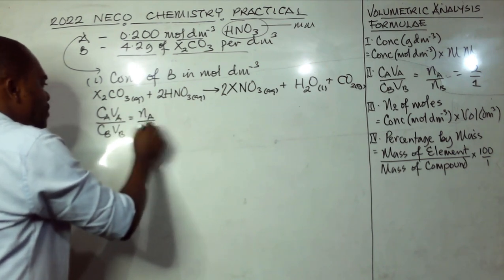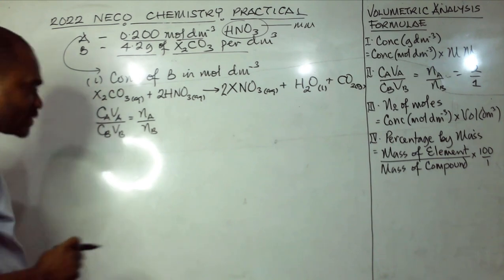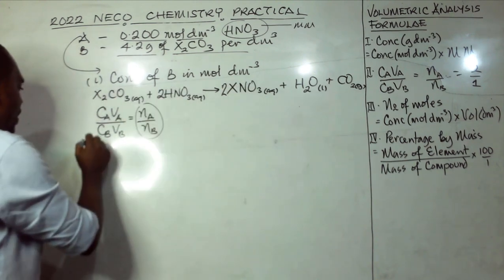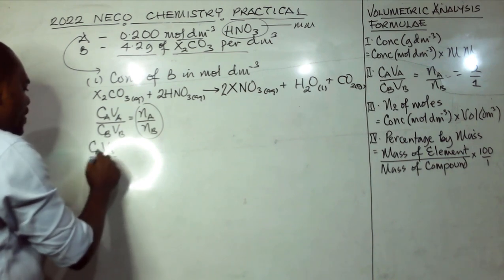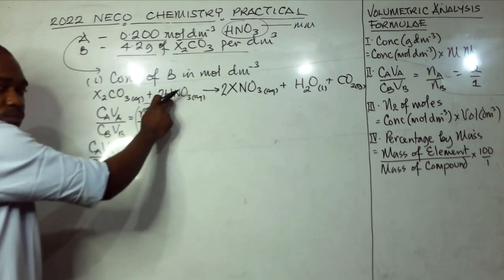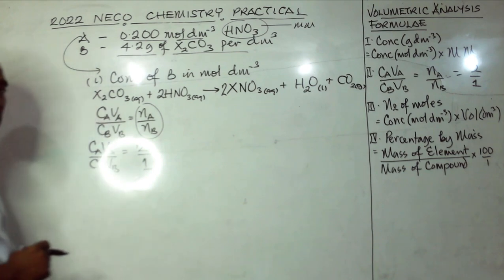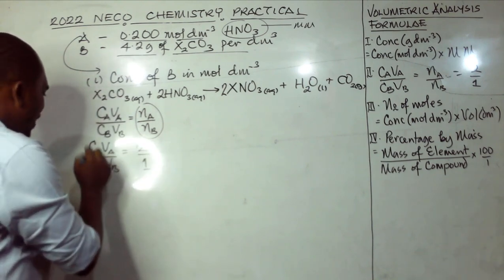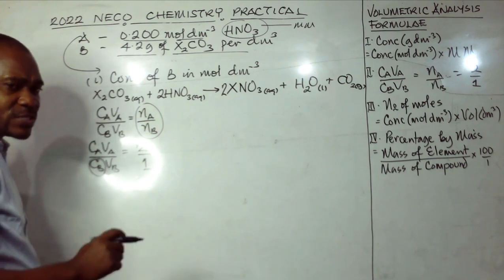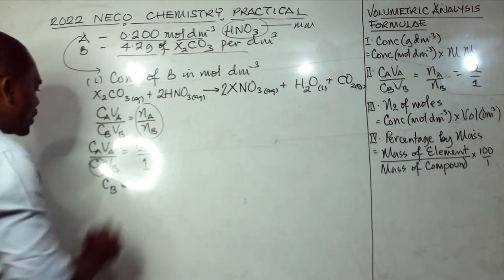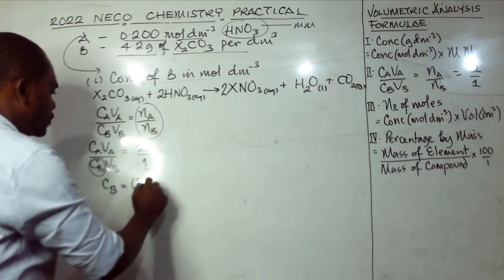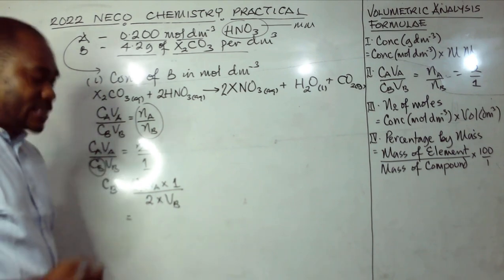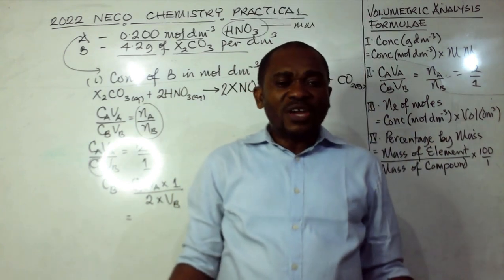Setting up: CAVA / CBVB = nA/nB = 2/1. Making CB the subject: CB = CA × VA × 1 / (2 × VB). Substituting: CA = 0.2, VB = 25, so CB = 0.2 × VA × 1 / (2 × 25) = 0.2VA / 50 = 0.004VA mol/dm³.